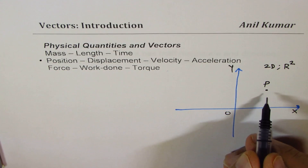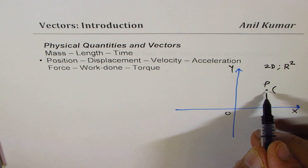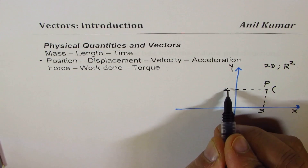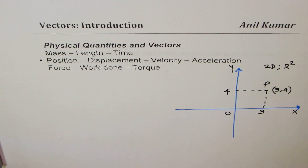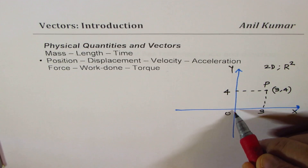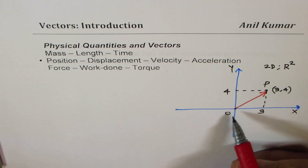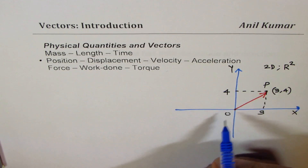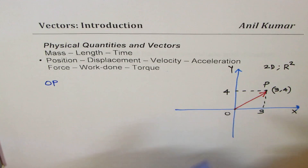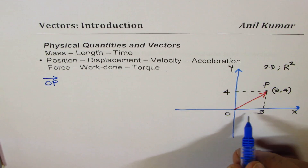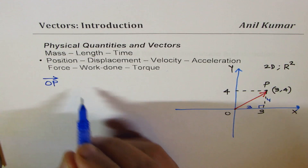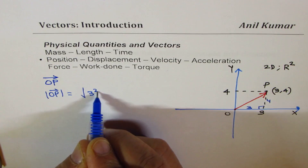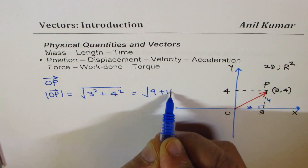For example, if my point is at a certain position in the Cartesian plane, I can always represent it by some coordinates. Let's say the coordinate point is (3, 4) — we write the X coordinate first, then the Y, and that becomes the position. In the context of vectors, from the origin O to point P, we give a direction: from O to P. The length is 3 units along X and 4 along Y, so by the Pythagorean theorem, the magnitude of OP is √(3² + 4²) = √(9 + 16) = √25 = 5. So point P is 5 units away from the origin, and its position is (3, 4).